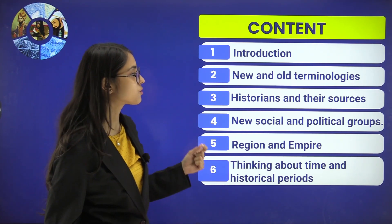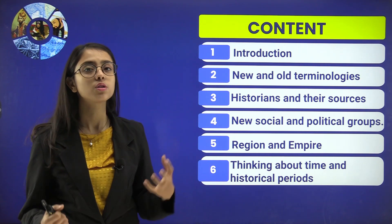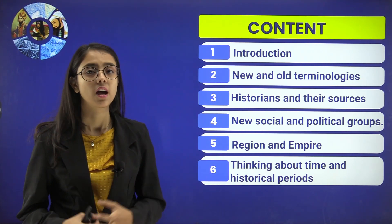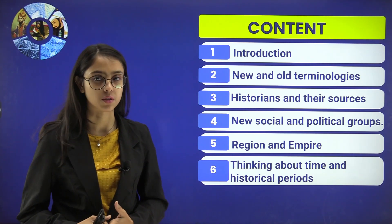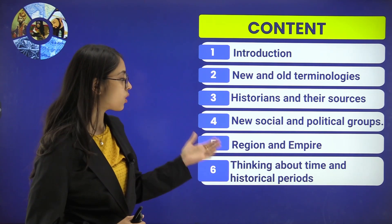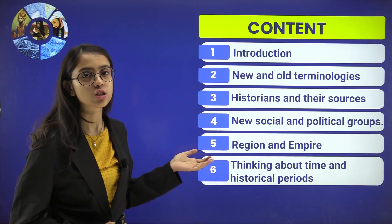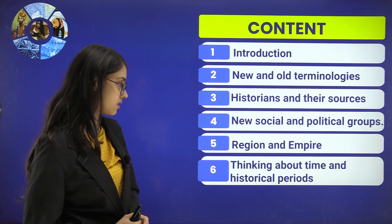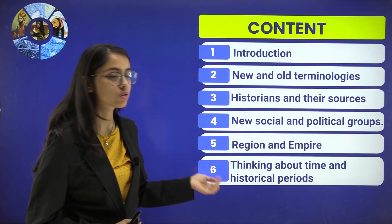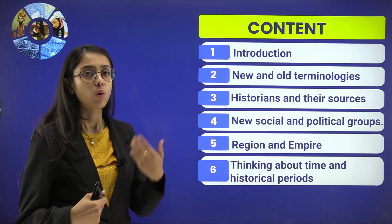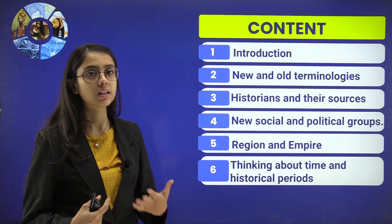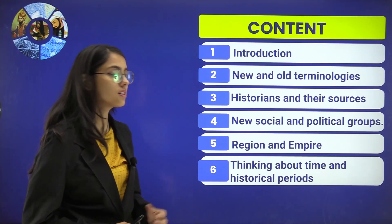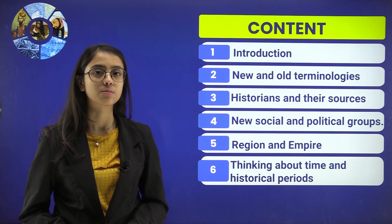Then we will see new social and political groups — what were the new social groups existing in India at that time and what were the political groups and powers. Then we will see what empires were established in different regions of the Indian subcontinent. And finally, thinking about time and historical periods — what kinds of historical periods are of significant importance to Indian history.